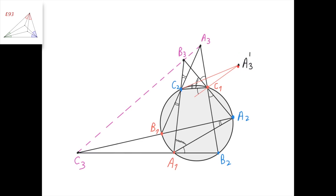Let A3' be the isogonal conjugate of A3 with respect to triangle C1, C2, B3. This means lines C2, A3' and C2, A3 are isogonal with respect to the angle at C2, so this angle equals this angle. Similarly, lines A3', C1 and A3, C1 are isogonal with respect to angle B3, C1, C2, so this angle equals this angle. Notice how A3' is defined with respect to triangle C1, C2, B3, and how C3 is defined with respect to the similar triangle A1, A2, B3 — A3' and C3 are corresponding elements in these two similar triangles.